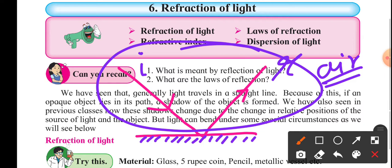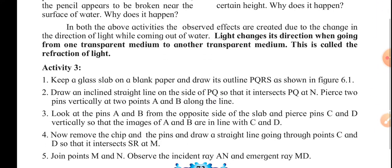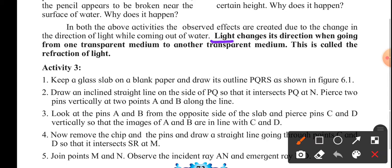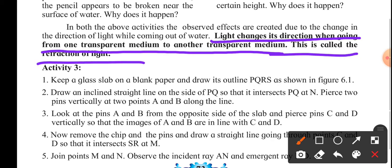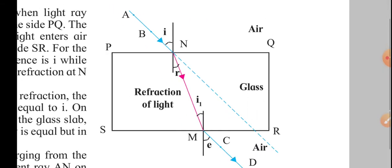When we talk about refraction of light, the most important part is the change of medium. In reflection, the incident and reflected rays are in the same medium. But in refraction, the basic concept is a change of medium. Whenever light travels from one medium to another medium, there will be a change in its path. This is called refraction of light.